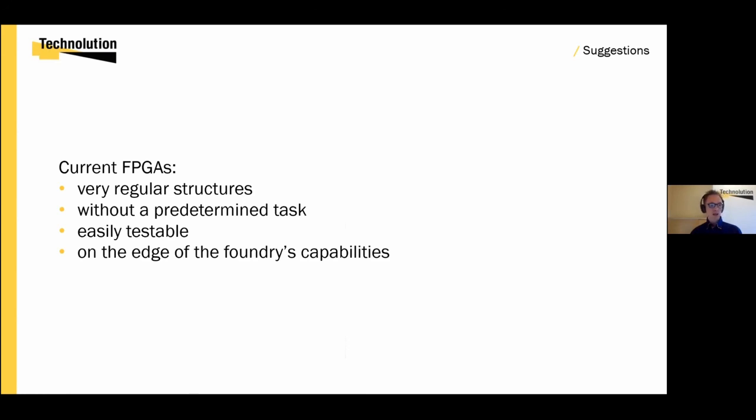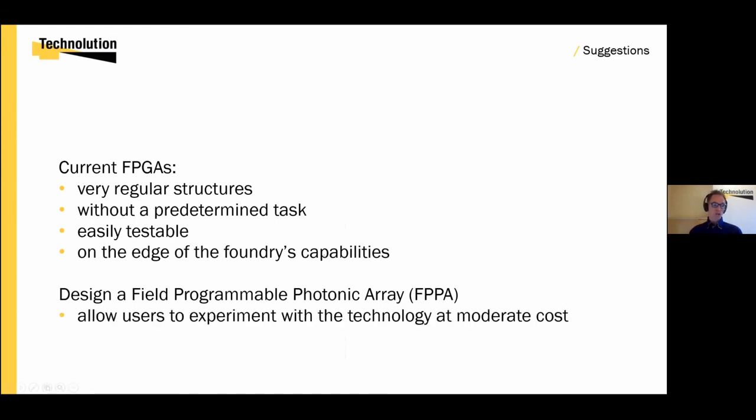For the user, this means that we have access to high-speed processes without the drawbacks of producing our own chips, which is a costly and also time-consuming endeavor. These benefits could also be brought to the photonics world. I would suggest designing a field programmable photonics array, which can be programmed using normal IC technology. Such an FPPA would allow users to experiment with technology at moderate cost and also allow foundries to fully test the design, as well as the process. And I hope you will be as successful as Xilinx and Altera were with their FPGAs.